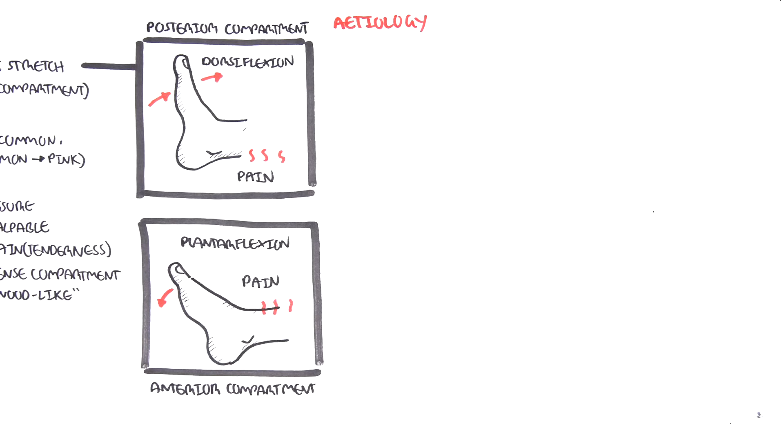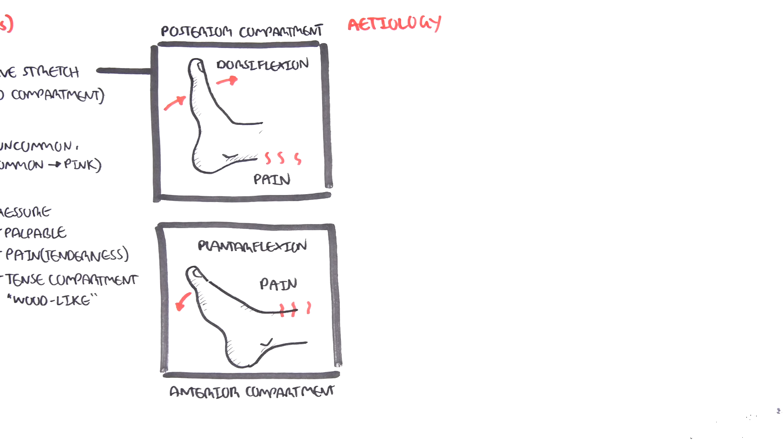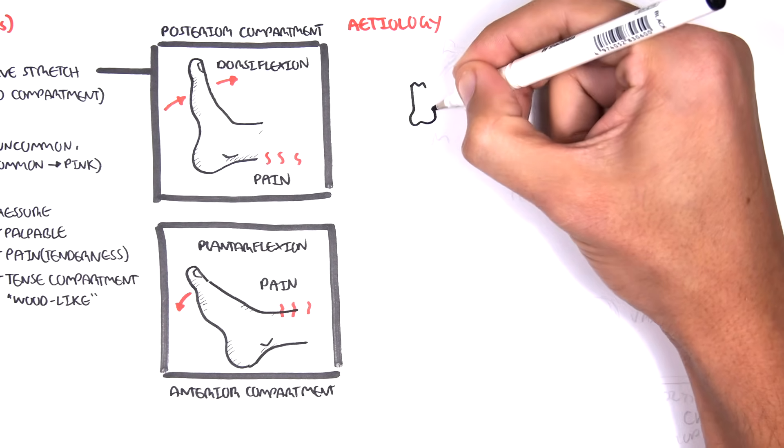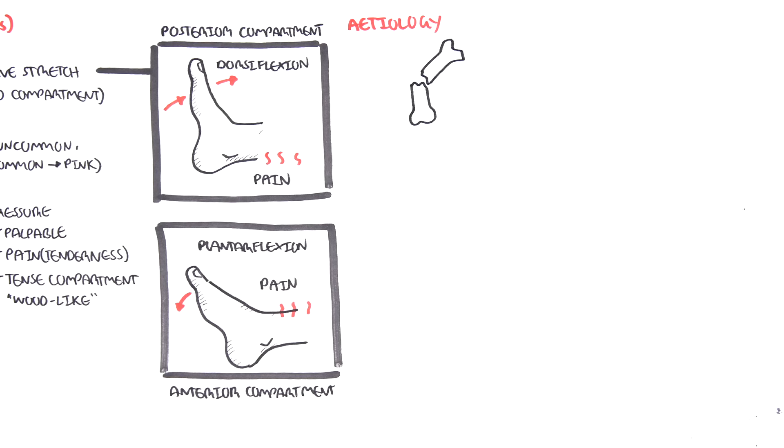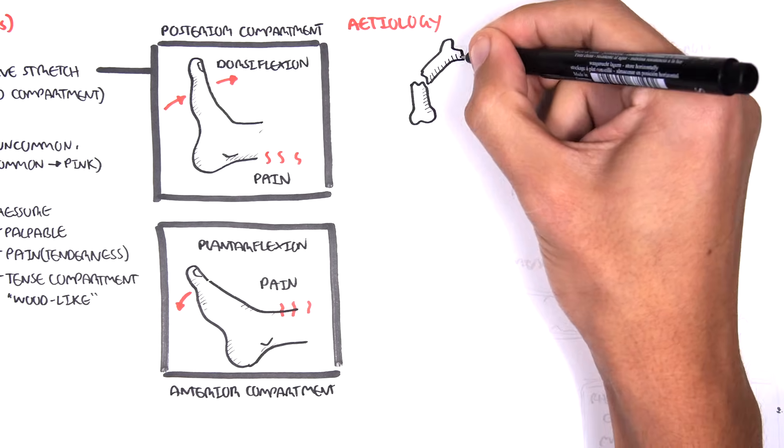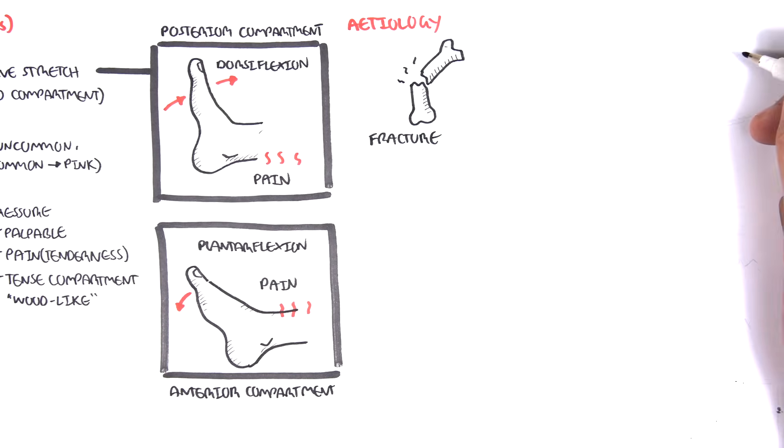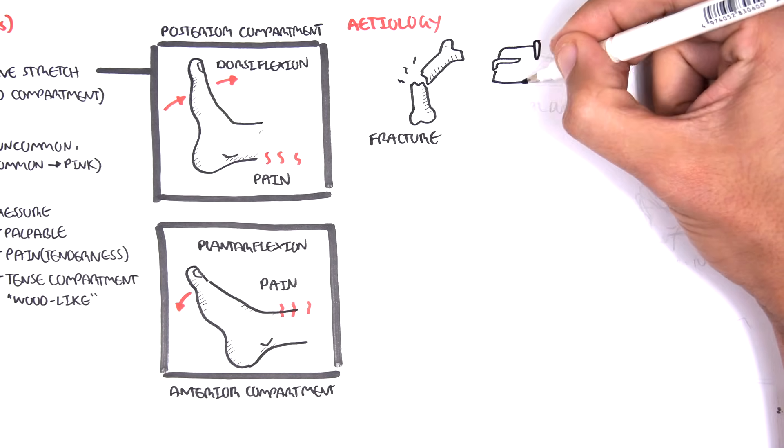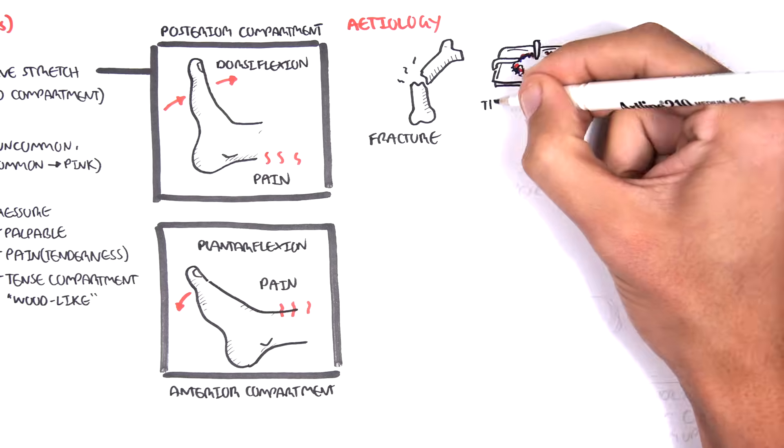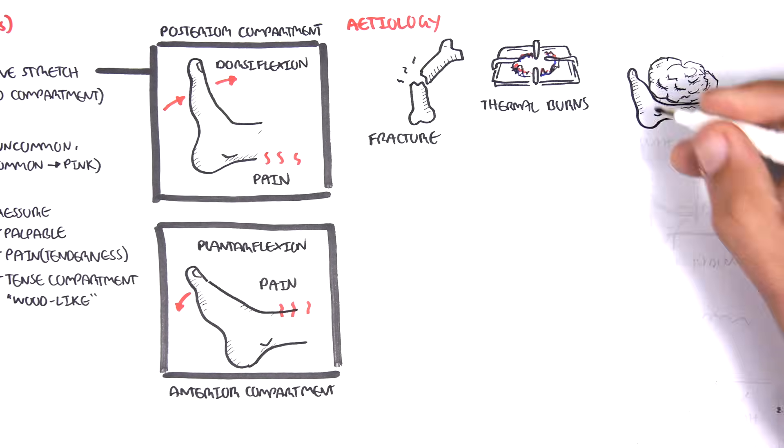Let us look at what can cause acute compartment syndrome. Some of these are also the risk factors. The etiology or cause of acute compartment syndrome includes fractures, which make up the majority, 75% of cases, thermal burns, crush injury, and penetrating injury.